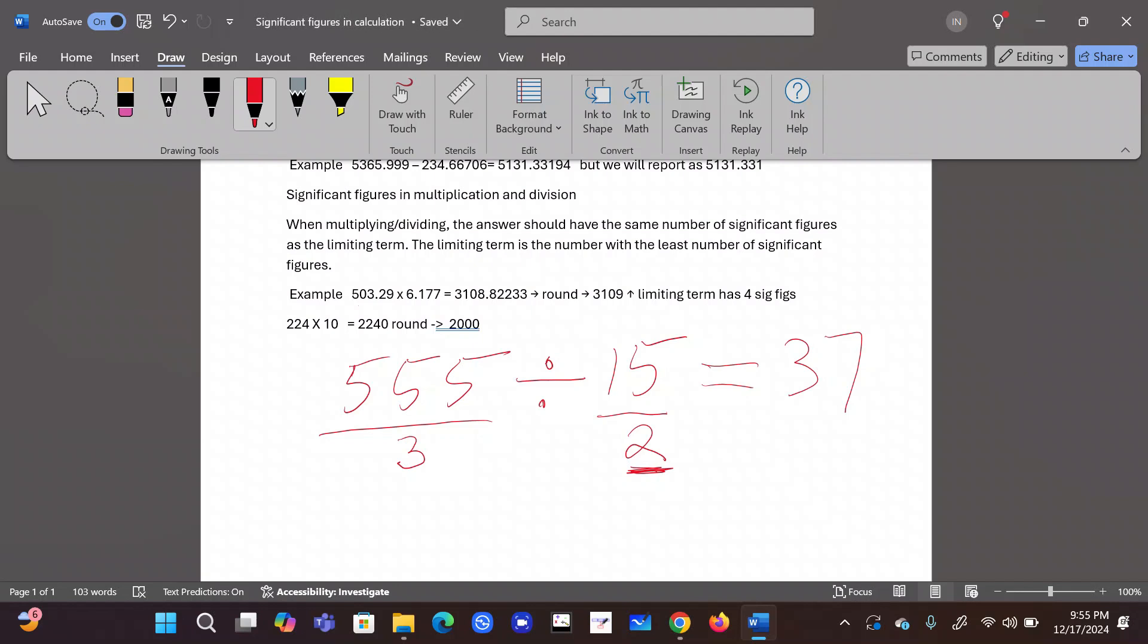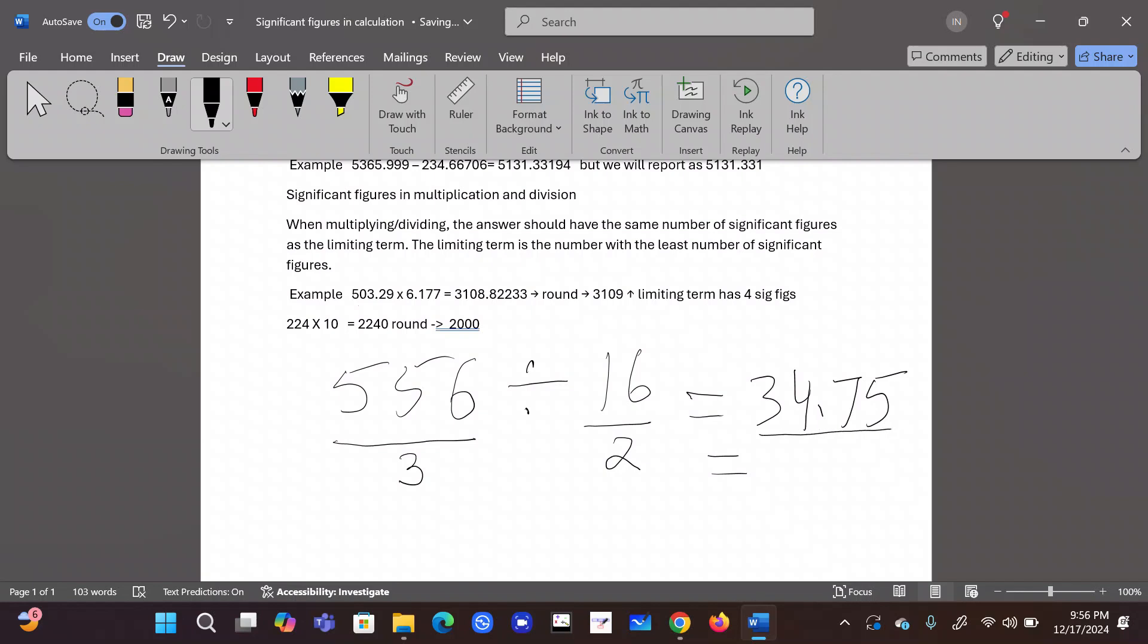But if this number is different, then for example, let's see. This is the last example I give you and we will end the class. 556 divided by 16. So what would be the answer? 556 divided by 16, 34.75. How many significant figures in 556? 3. How many here? 2. So I have to round off this number to two significant figures. There are four significant figures. 34.75. So what I'm going to do? 35. And that is correct.